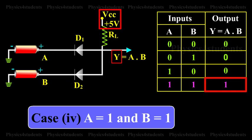Thus, the output will be high only when the inputs A and B are high. The table summarizes the function of an AND gate.